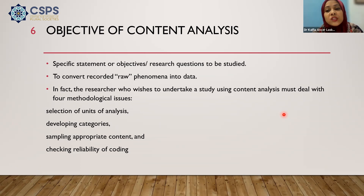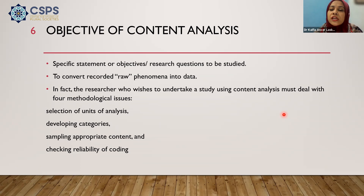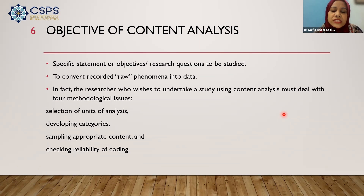Checking reliability and coding is another step that should be maintained religiously, because once we do content analysis, there is every possibility that we might get biased. To avoid researcher biasness, the researcher should be reflexive at every step — from choosing the unit of analysis, to developing the categories, to selecting the samples. Even in coding, the researcher should ask: am I deviating? Am I getting biased? What we do is conduct inter-coder reliability — I will discuss that in the later slides.